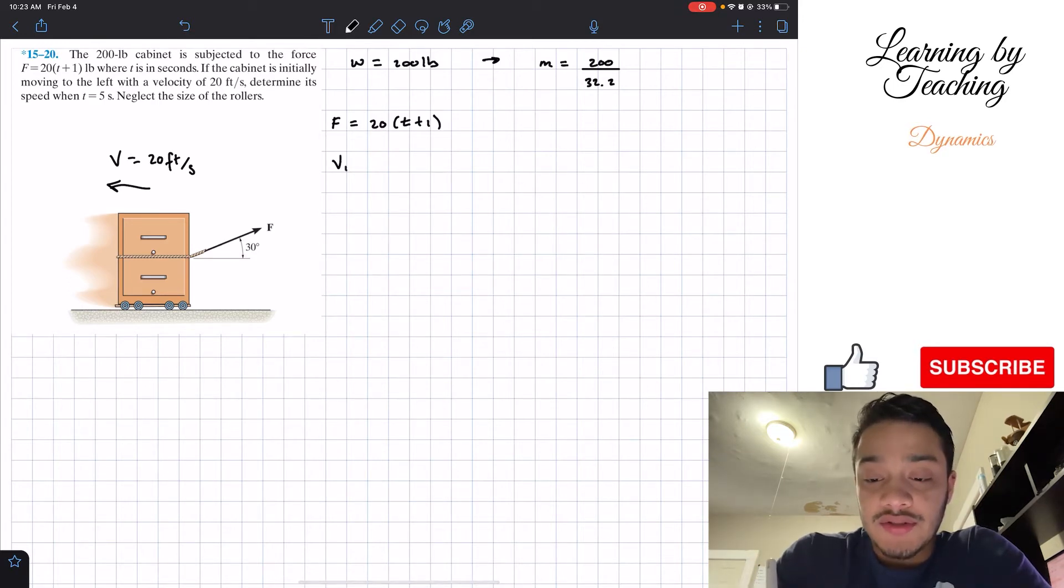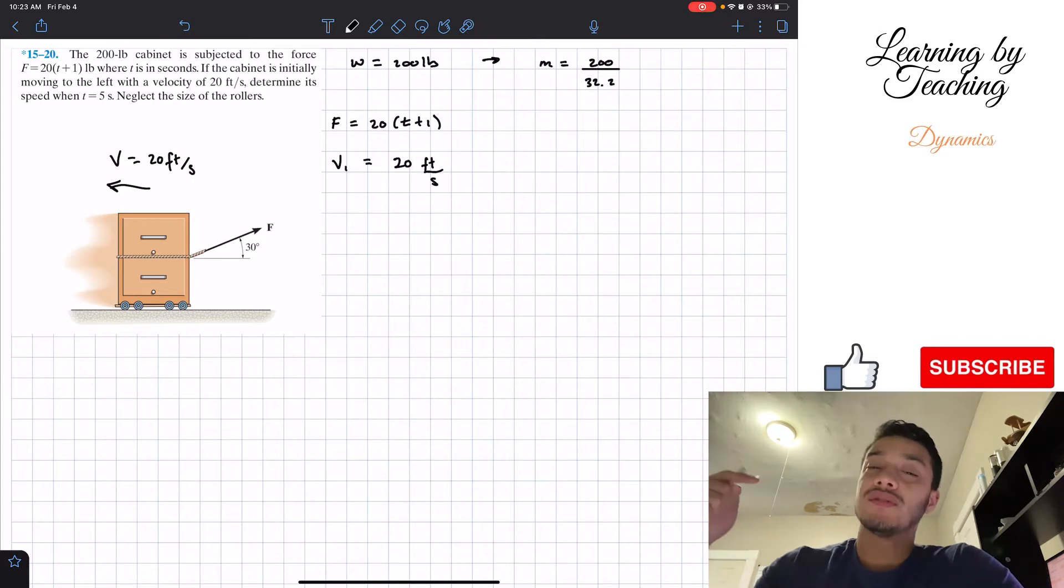Also the velocity, initial velocity is equal to 20 feet per second and it's going to the left. So since it's going to the left, I'm assuming that the left is negative direction, so I'm going to add a negative to this velocity.